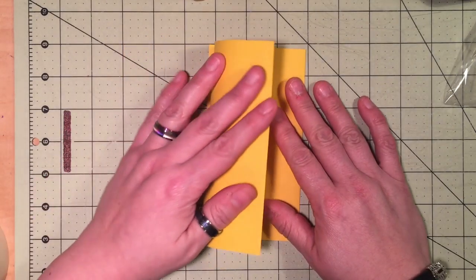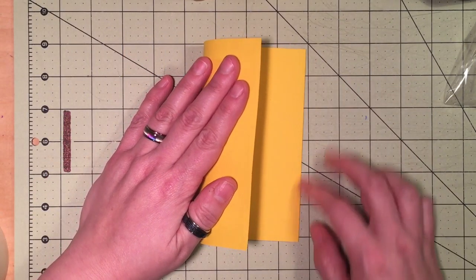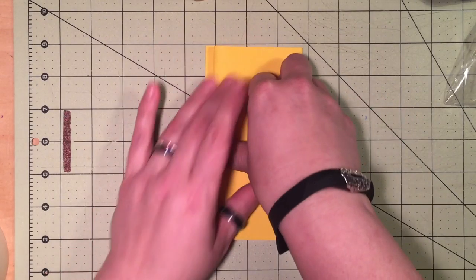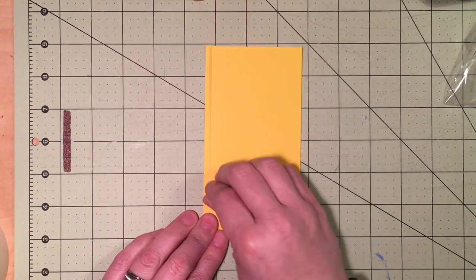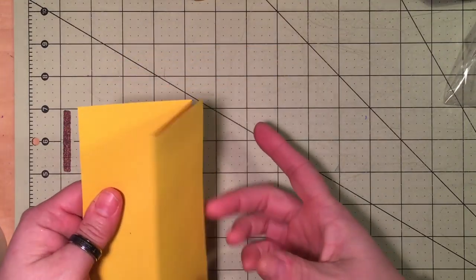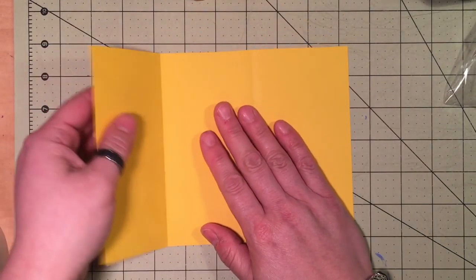Flip it over and now you match this edge to this edge of the paper. And as you can see, I was just a teeny tiny bit off, but that's okay. No one's going to be measuring it with a ruler. It's just to help you be able to divide this paper into thirds.